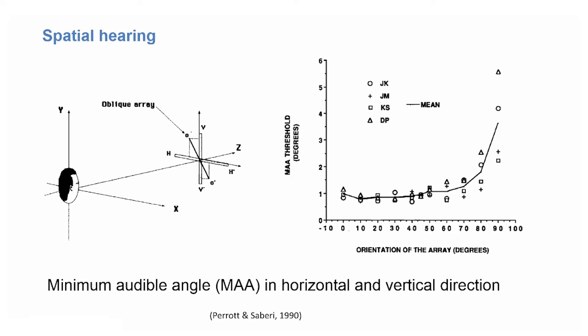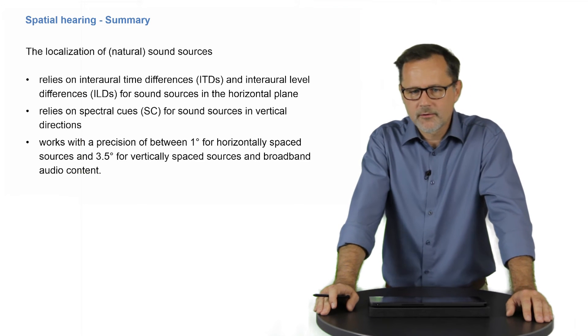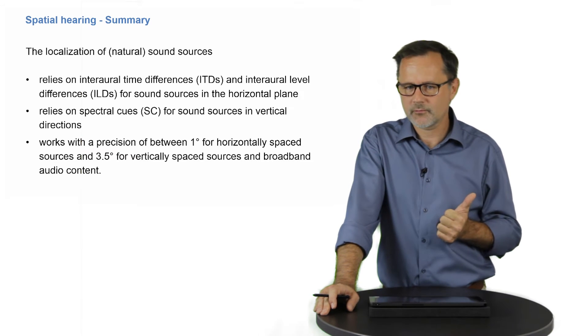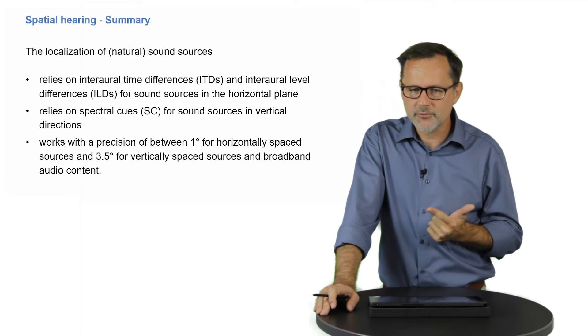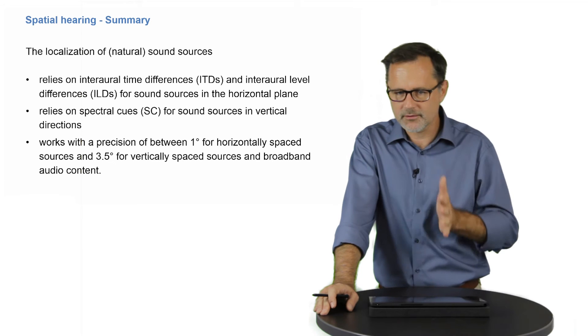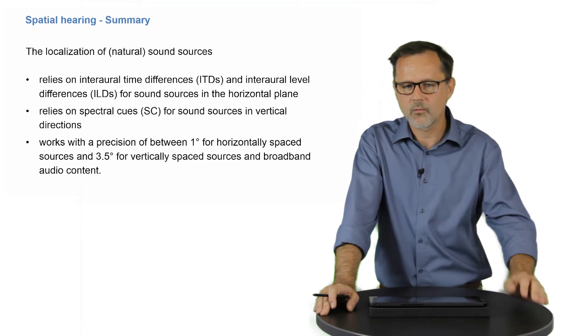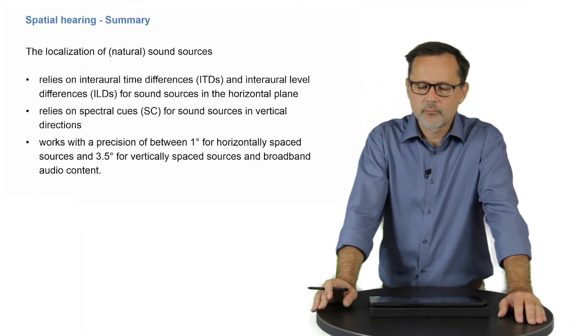As a stimulus, clicks were used as a signal with both temporal and broadband spectral information. So we can summarize that the localization of natural sound sources relies on interaural time and level differences for sound sources in the horizontal plane, that it relies on spectral cues for sound sources separated vertically, and that localization works with a precision of between 1 degree and 3 to 4 degrees for horizontal and vertically spaced sources measured with broadband audio content.